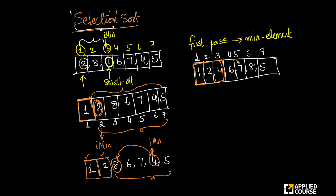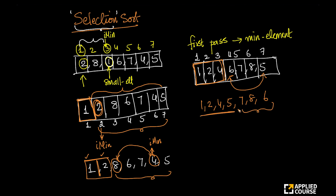Now I need to find the fourth smallest element. I take this and start comparing. 6 with 7 — 6 is smaller. 6 with 8 — 6 is smaller. 6 with 5 — 5 is smaller. So I swap these two. Now I have: 1, 2, 4, 5, 7, 8, and 6. These four are already sorted. Amongst the remaining three, the smallest is 6, so I swap those two.